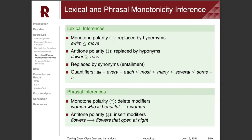Phrasal monotonicity inference is phrase-level replacement based on monotonicity information for key tokens in the phrase. The replacement is either done by deletion or insertion of modifiers.